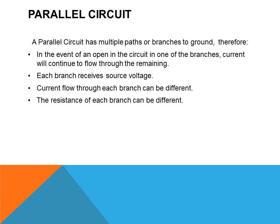A parallel circuit has multiple paths or branches to ground. Therefore, in the event of an open in one of the branches, current will continue to flow through the remaining branches. Each branch receives the source voltage. Current flow through each branch can be different, and it will be different based on the resistance in each branch. Lastly, the resistance of each branch can be different in a parallel circuit.